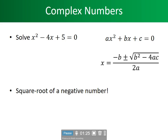When we talk about complex numbers, we're talking about polynomials. Let's look at the complex numbers before us: x squared minus 4x plus 5 equals 0. The general form this polynomial takes is a·x squared plus b·x plus c equals 0. We would like to find out what the roots of x are. So we plug in b = -4, a = 1, and c = 5.